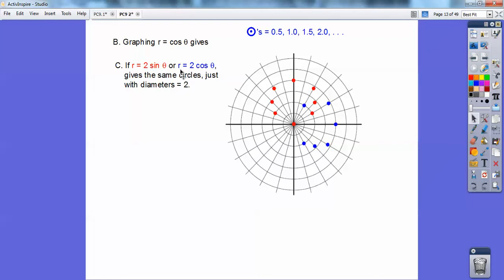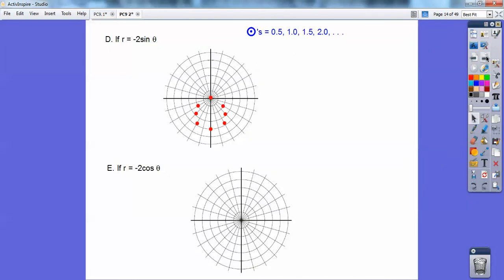And the red guy is r = 2 sine theta, and the blue guy is r = 2 cosine theta right there. And they're just circles right there.